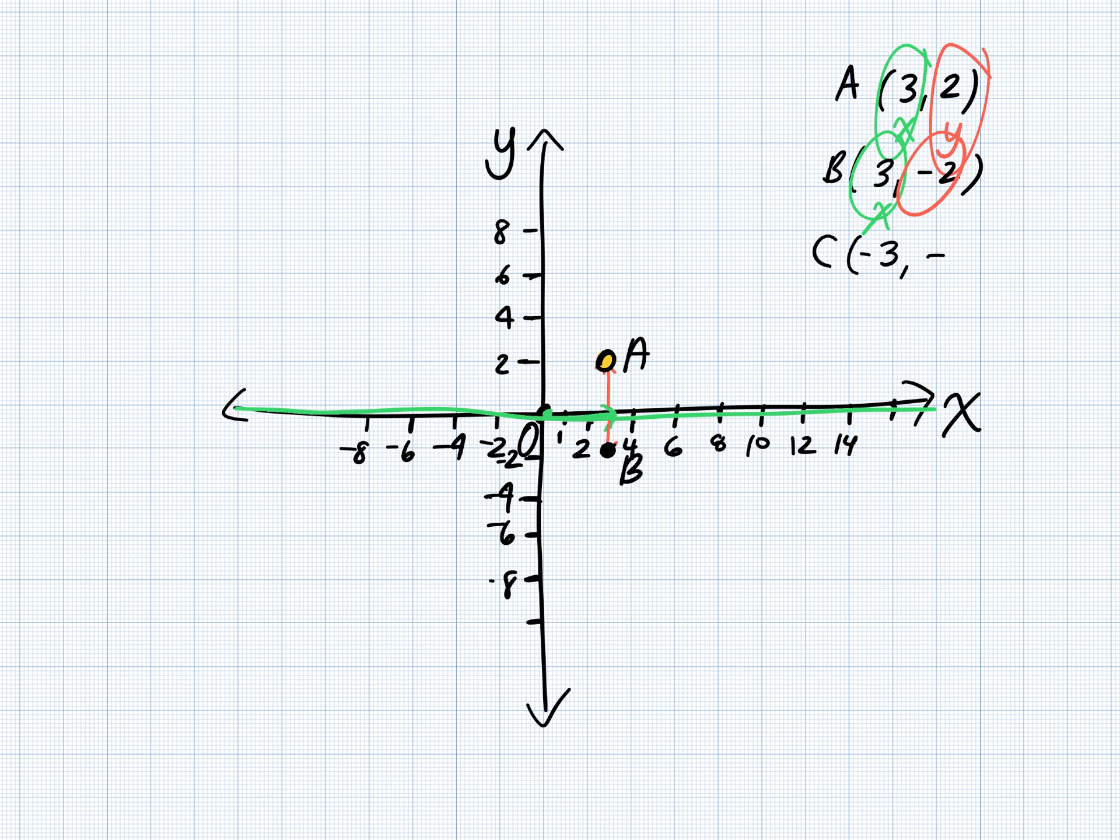C is negative 3 and negative 2. And always label it if you forget. X and then Y. X tells you which way to move horizontally. Am I going right or left now for X? Why am I going to the left? It's negative. So I'm going to move to negative 3, and then am I going to go up or down? So we're going to go down, because it's negative 2, to here, and this is point C.